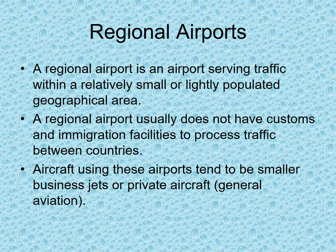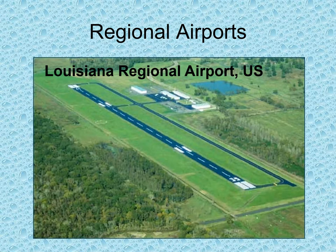A regional airport serves traffic within a relatively small or lightly populated geographical area. It usually does not have customs and immigration facilities. Aircraft using these airports tend to be smaller business jets or private aircraft for general aviation operations. An example shown is the Louisiana Interregional Airport in the USA, featuring a runway strip and a small terminal building.